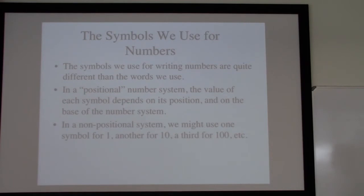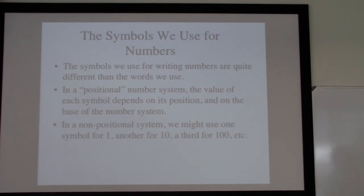On the other hand, in a non-positional system such as Roman numerals, we would use one symbol for 1 — a straight bar — another for 10 such as X, a third for 100 such as C, and so on.